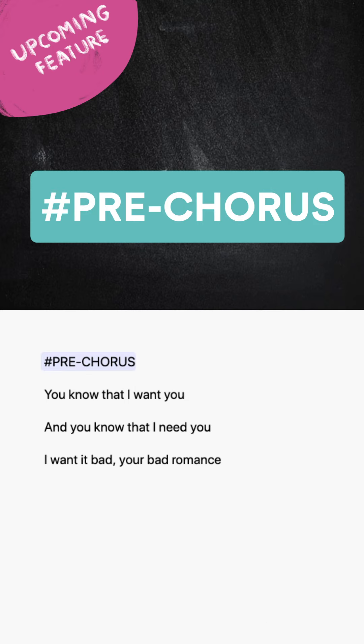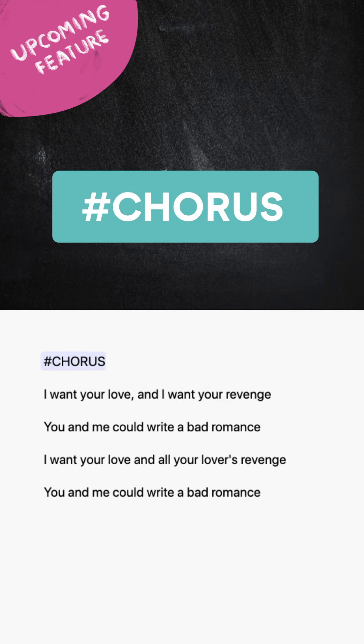Pre-chorus: An optional section included between verse and chorus. Chorus: Contains the main theme of the song. It can also contain the song title. It is repeated after each verse or verses.